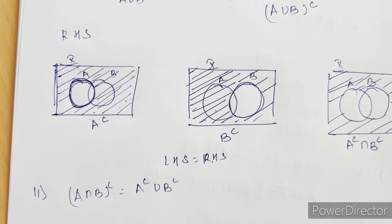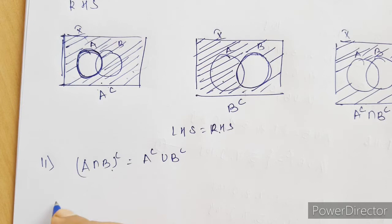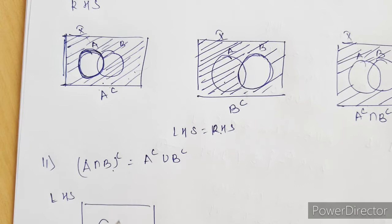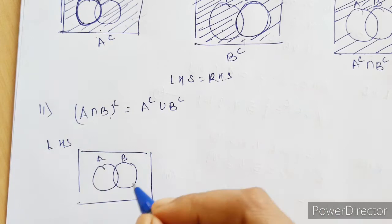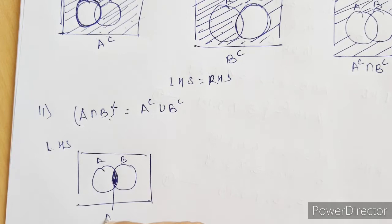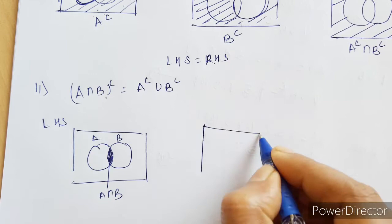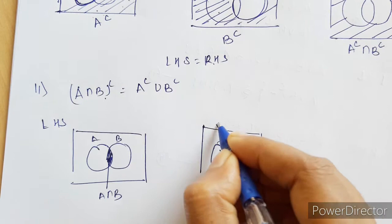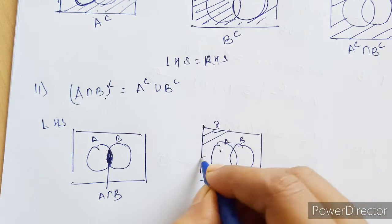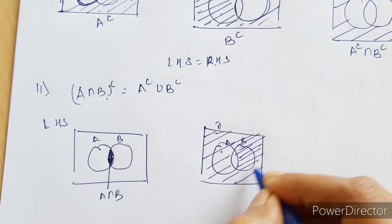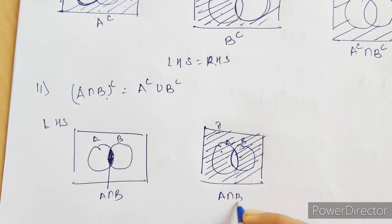Let's start with the left hand side. Draw A and B. First find A intersection B — this middle part common to A and B is nothing but A intersection B. Next we have to find A intersection B complement. Everything outside this middle part — everything other than this middle part — is going to be in A intersection B complement.